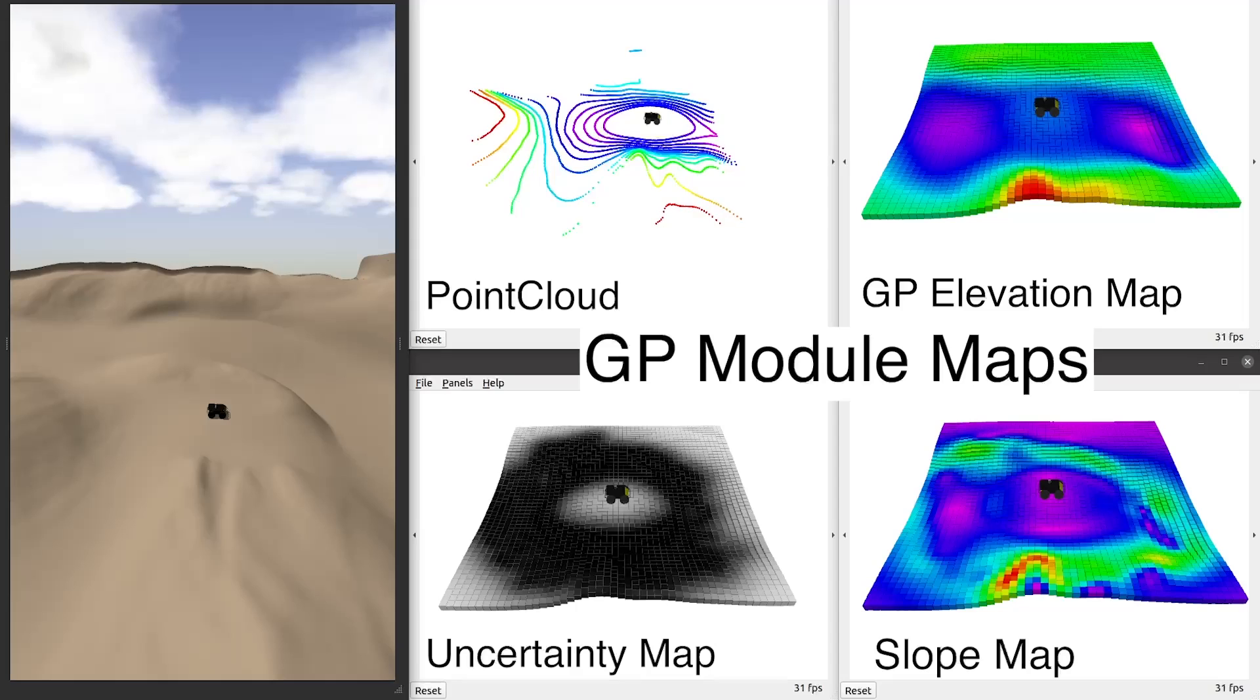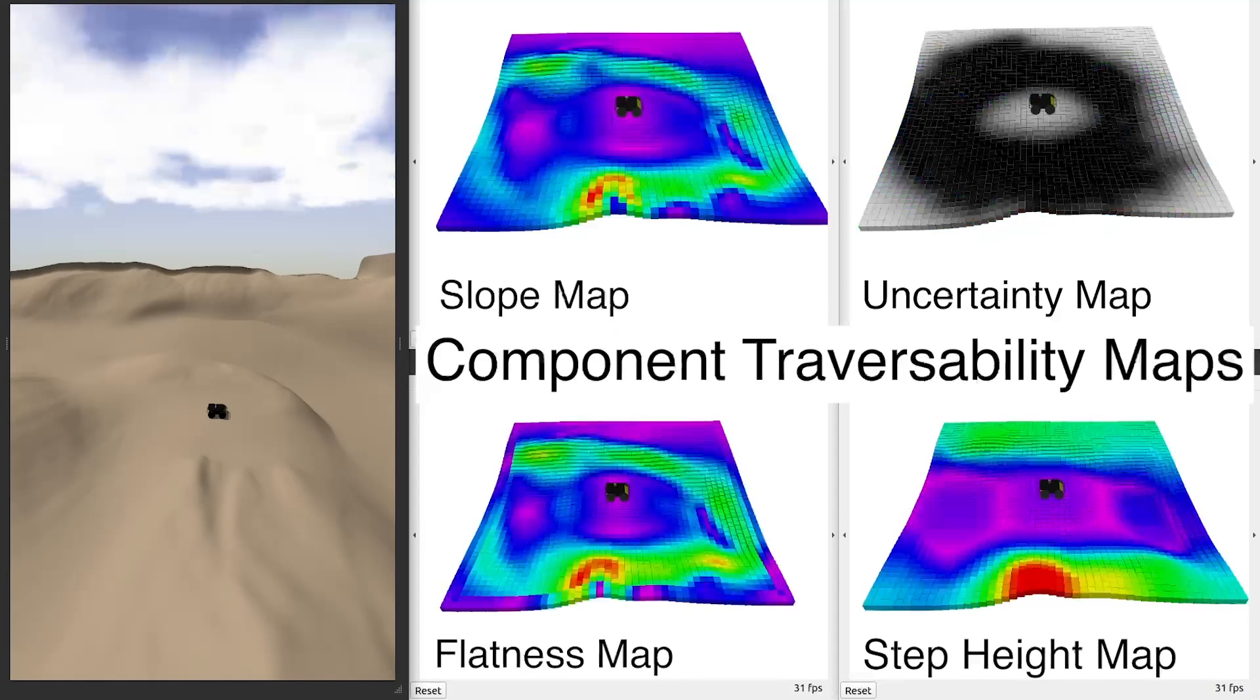From a point cloud sample, this module produces local GP elevation, variance or uncertainty, and gradient or slope local maps.